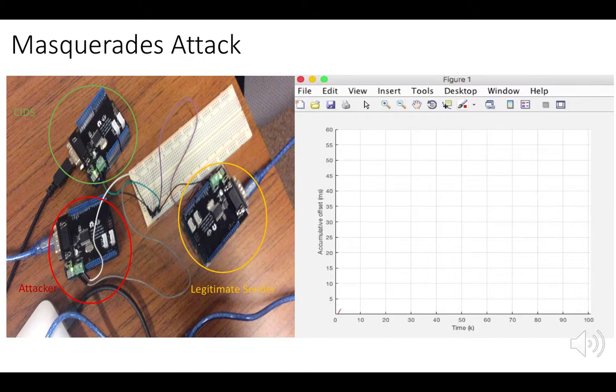The Legitimate Sender is circled in yellow and the Attacker in red, while the monitoring node, the CRES, is in green.